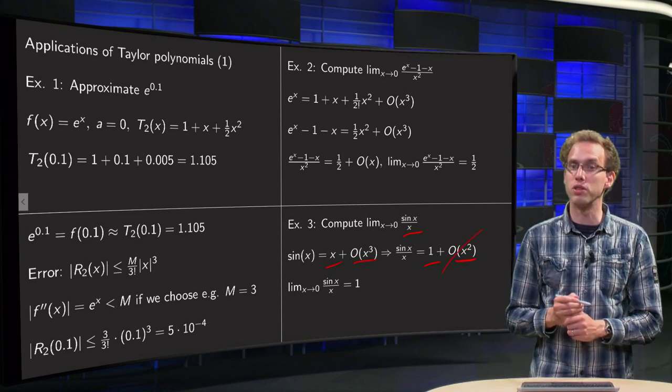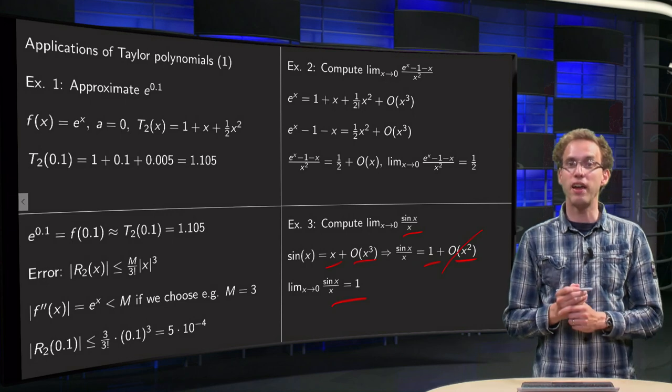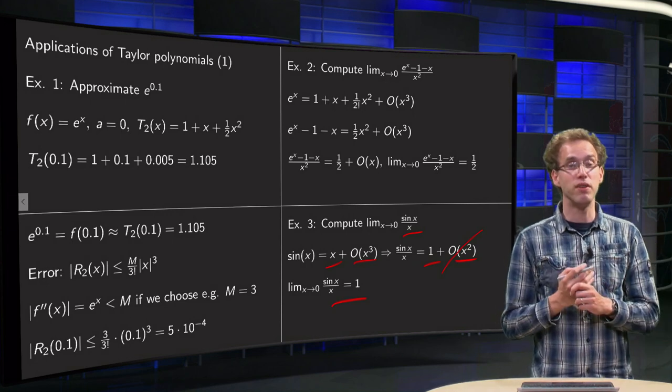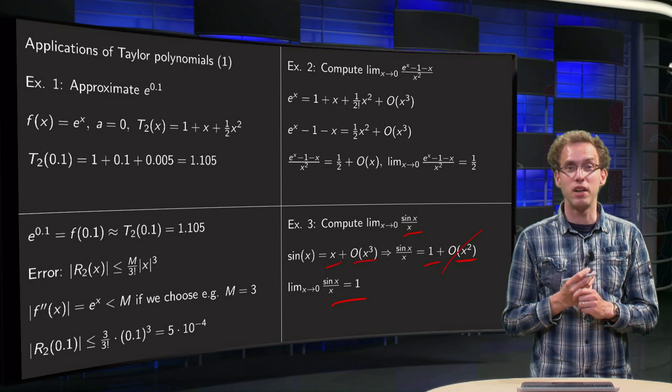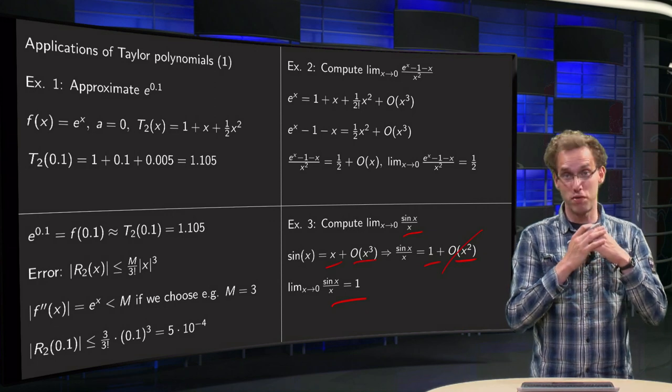And if you take x to 0, this one drops out of course, and this limit equals 1, and here we are. So, you see, if you use Taylor polynomials and Taylor series, you can compute your limits very fast.